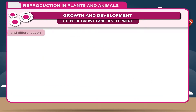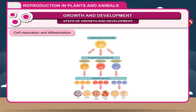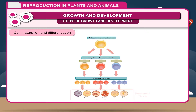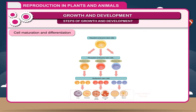Cell Maturation and Differentiation: This is the last phase of growth, which involves deposition of secondary walls and develops into permanent tissue. Through this process, cells become specialized into specific tissues.